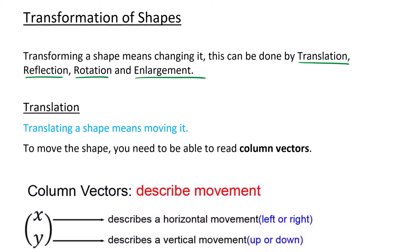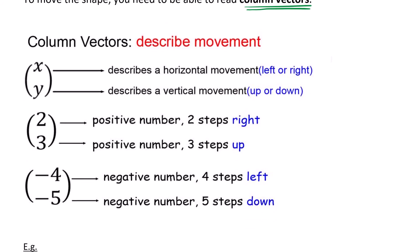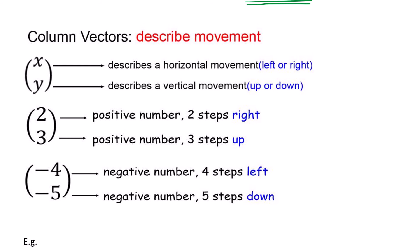Translating a shape means moving it. To move the shape you need to be able to read column vectors, and I'm going to go through what these are. So column vectors describe movement.